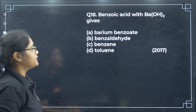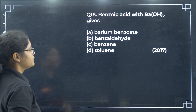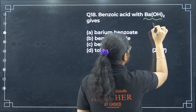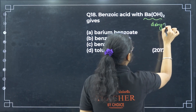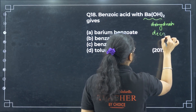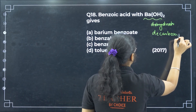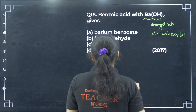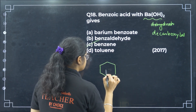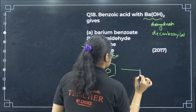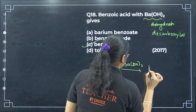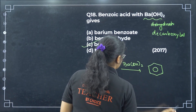Benzoic acid with barium hydroxide: barium hydroxide behaves as a decarboxylation agent. So benzoic acid treated with barium hydroxide undergoes decarboxylation to give benzene.